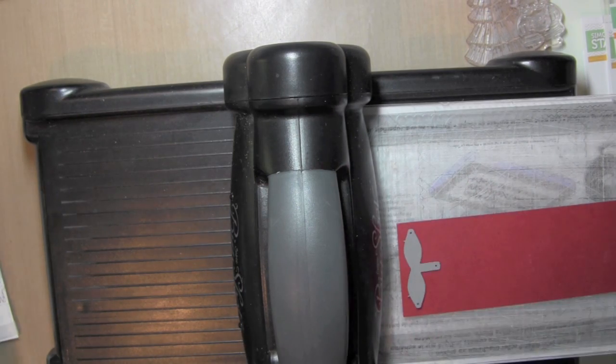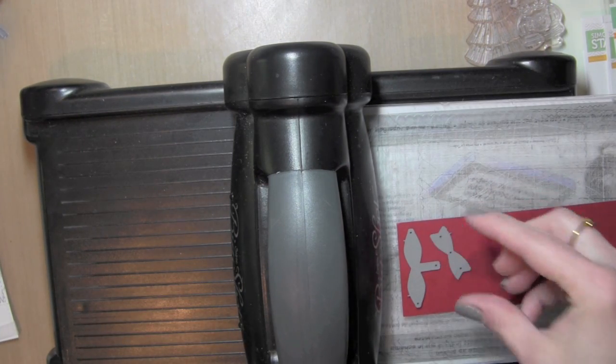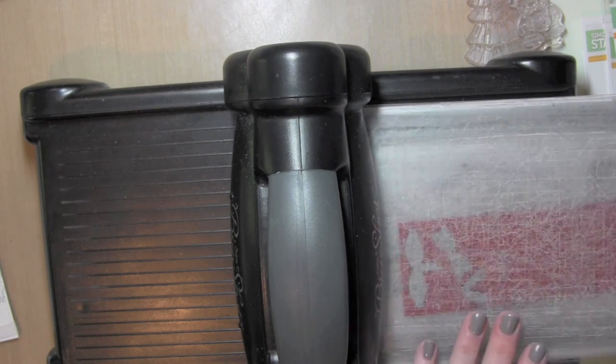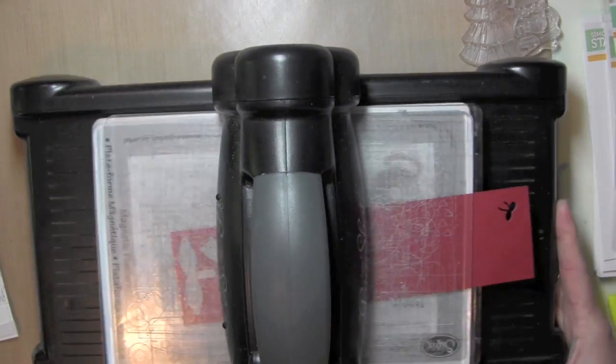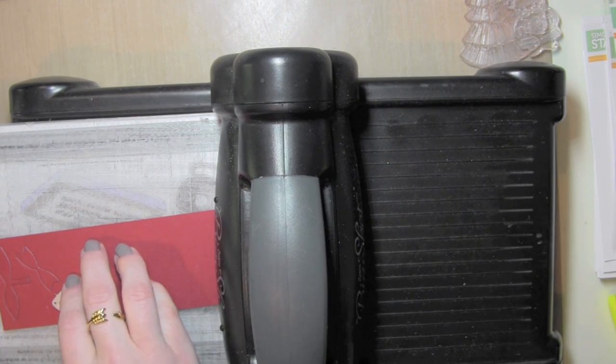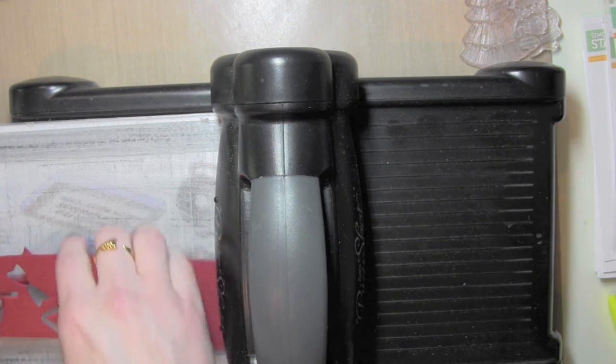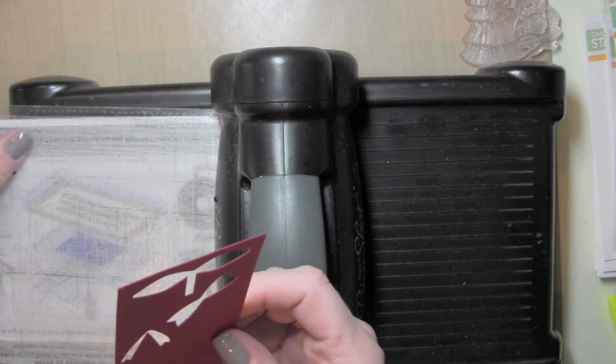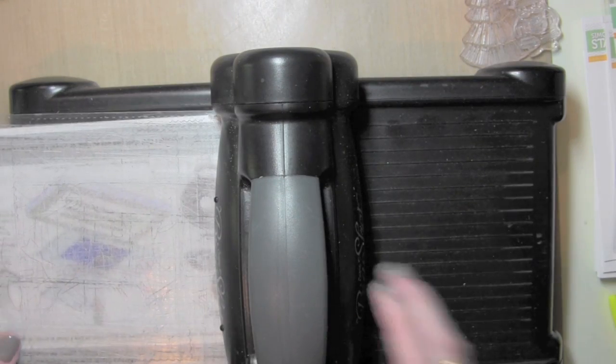While I have my die cutting machine out I'm going to go ahead and cut the dainty bow. This is also a Mama Elephant die and I want to decorate the outside of my house or the outside of the window with a Christmas red bow. I just cut that from some red card stock.